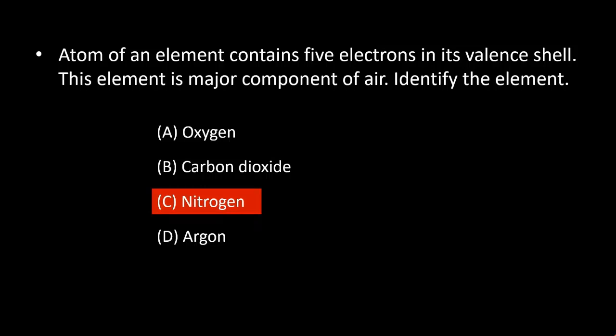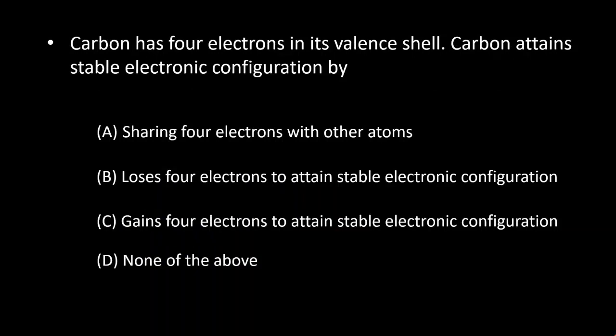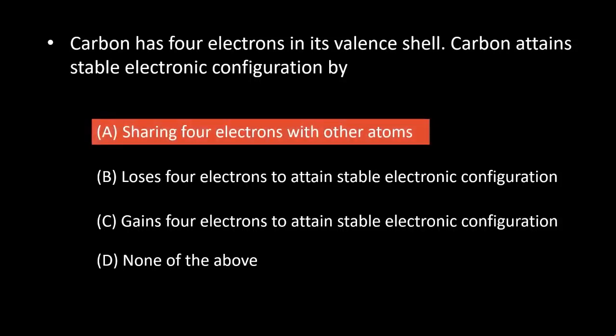The next question is: Carbon has 4 electrons in its valence shell. Carbon attains stable electronic configuration by sharing 4 electrons with other atoms. So, option A, sharing 4 electrons with other atoms, is the right answer.